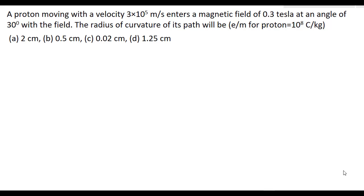The radius of curvature of its path will be, given e by m for proton equals 10 to the power 8 coulomb per kg. The options are: (a) 2 centimeter, (b) 0.5 centimeter, (c) 0.02 centimeter, and (d) 1.25 centimeter.